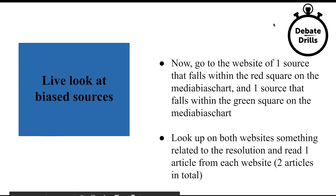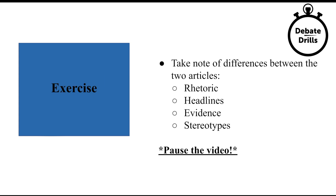Let's take another live look at biased sources. I want you to do two things: go to the website of one source that falls within the red square in the media bias chart and one source that falls within the green square. Look up something related to the resolution on both websites and read one article from each — two articles in total. Take note of differences between the two: What is their rhetoric like? What are their headlines like? What's their evidence like? What are the stereotypes? Now pause the video and go engage in the exercise.